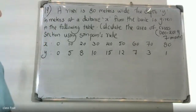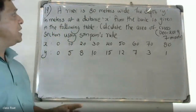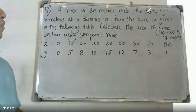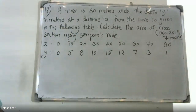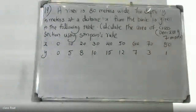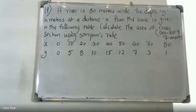Good morning students. At the University of Kostadana, a river is 80 meters wide. The depth in meters as a distance x from the bank is given in the following table. Find the area of the cross-section using Simpson's Rule.